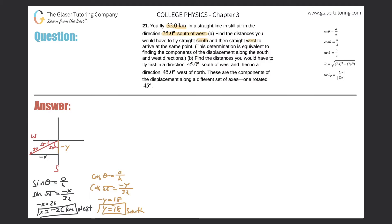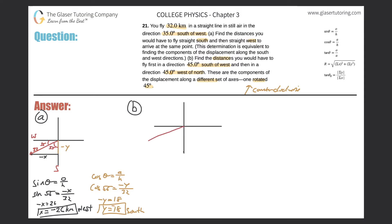That takes care of part A. For part B: find the distances you would have to fly first in a direction 45 degrees south of west, and then in a direction 45 degrees west of north. The hint says these are components of the displacement along a different set of axes, one rotated 45 degrees. Let's redraw the axes a little bigger and plug in our resultant vector.